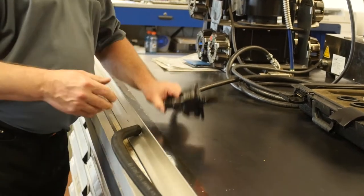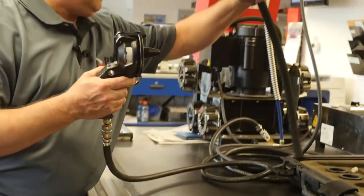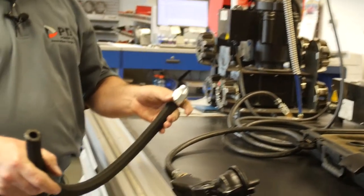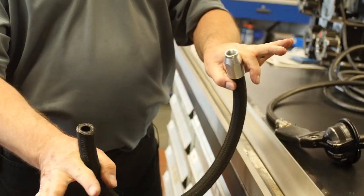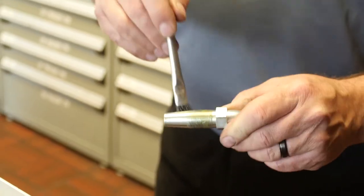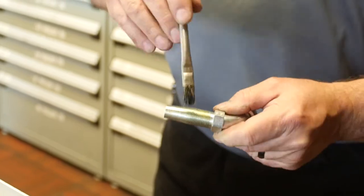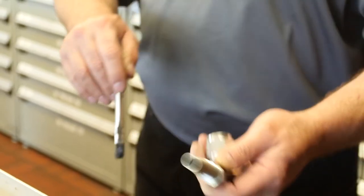Now the hose is clean, ultra-clean they call it, from the inside. We'll apply light lubricant to the threads. This allows the insert to thread in evenly without marring or damaging the inner liner of the hose.